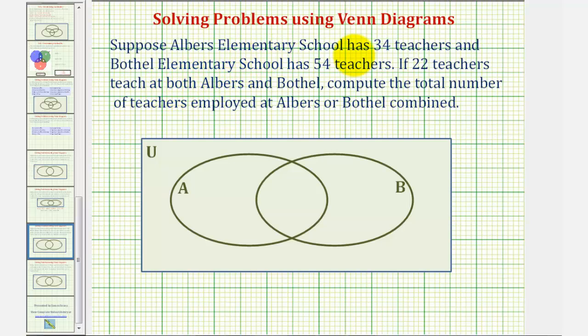Suppose Albers Elementary School has 34 teachers and Bothell Elementary School has 54 teachers. If 22 teachers teach at both Albers and Bothell, compute the total number of teachers employed at Albers or Bothell combined.